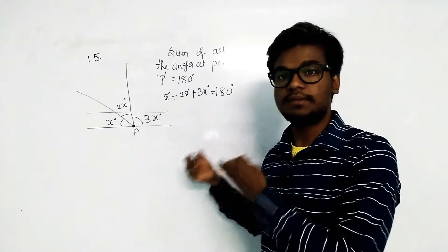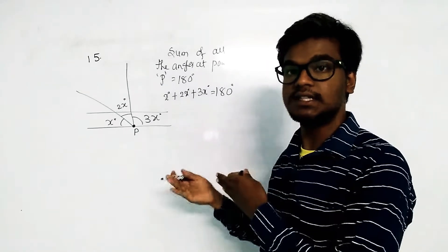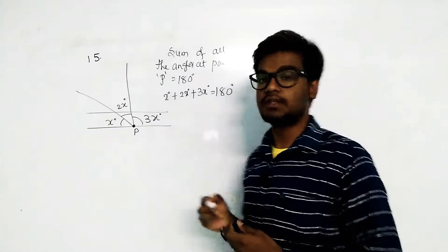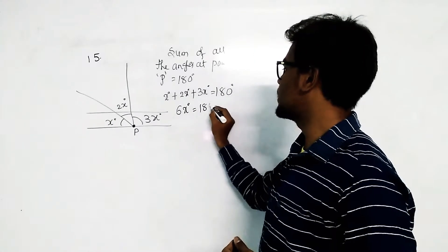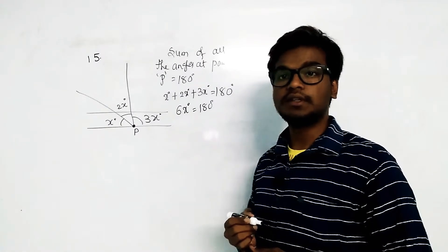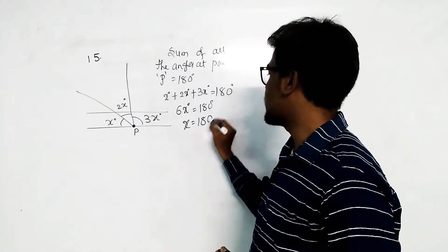x plus 2x plus 3x will become 6x, which equals 180 degrees. Then x is equal to 180 divided by 6, which is 30 degrees.